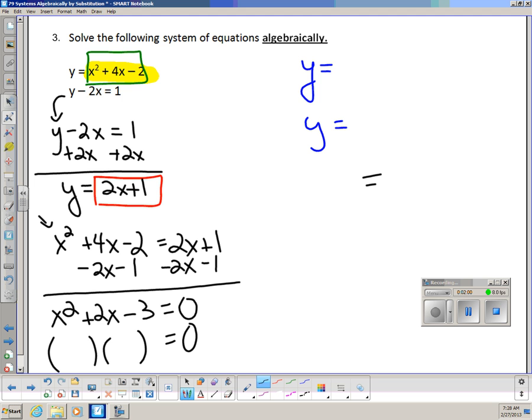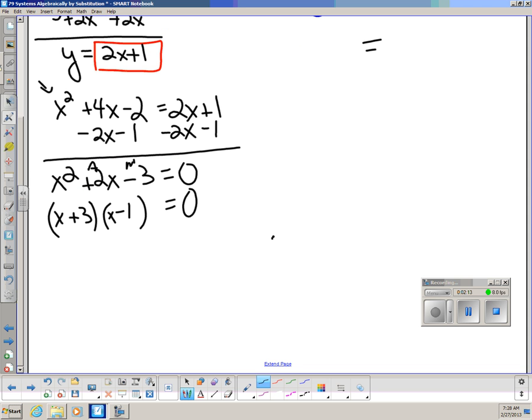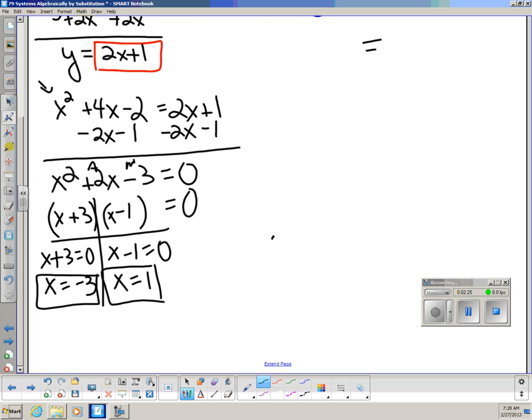And now we can factor this. We're looking for numbers that add to positive 2 and multiply to negative 3. Those numbers are positive 3 and negative 1. And so now we get x plus 3 equals 0, x minus 1 equals 0. And therefore, x is negative 3 or x is 1. Both of these x values are valid, and we need to use both of them.